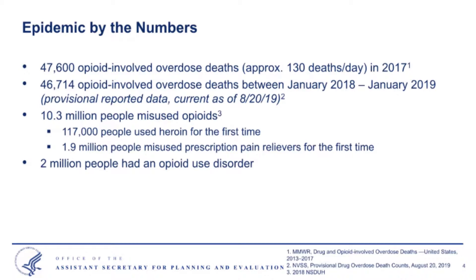Taking a look at the opioid epidemic by the numbers: in 2017, there were 47,600 opioid overdose deaths. Looking at the most current provisional overdose data from CDC for the 12-month period of January 2018 to January 2019, there have been 46,714 opioid overdose deaths. We have seen around a 3.4% decline in fatal overdoses over this time period.